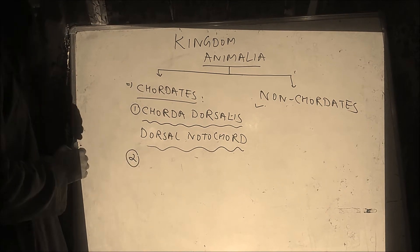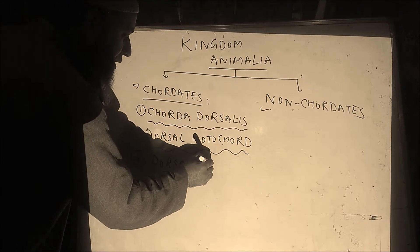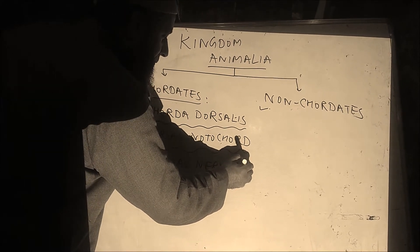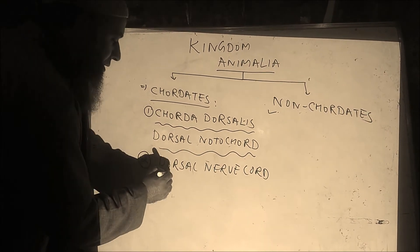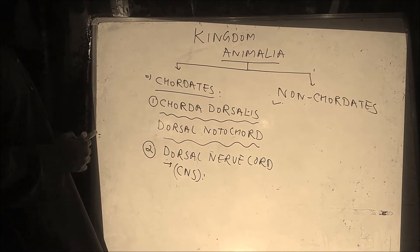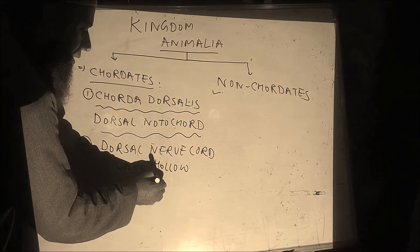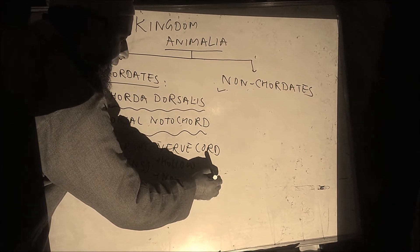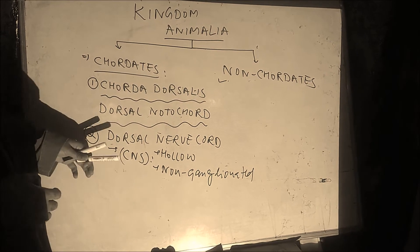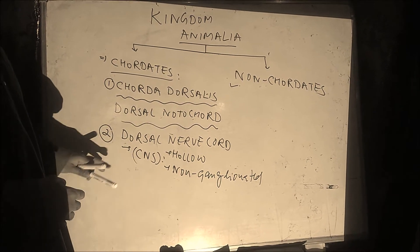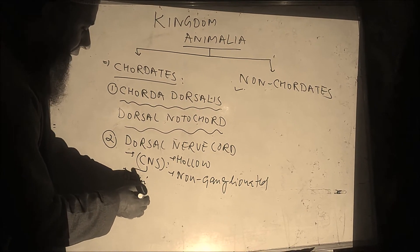The second difference between Chordates and Non-Chordates is the Dorsal Nerve Cord. This Dorsal Nerve Cord is the Central Nervous System — CNS. In Chordates, it is dorsal, hollow, and non-ganglionated. The Dorsal Nerve Cord is the CNS, which includes two main parts: one is the Brain and another is the Spinal Cord.